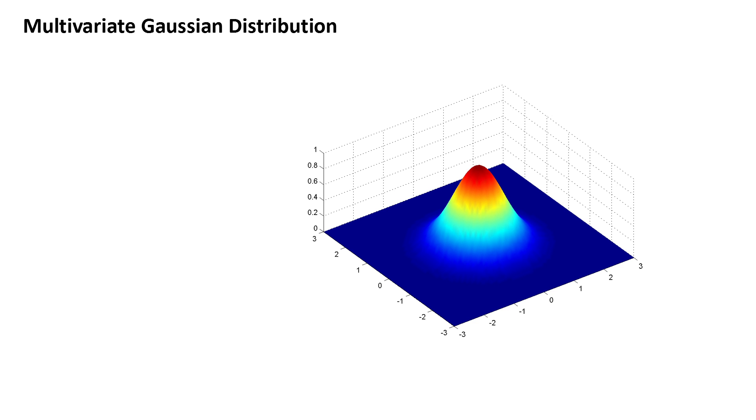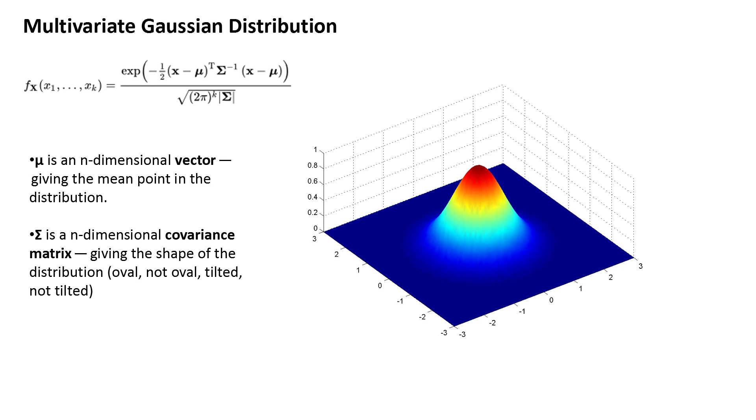This can be extended to a multivariate Gaussian distribution where we're looking at higher dimensions. Mu then becomes an n-dimensional vector giving the mean point in the distribution, and sigma becomes an n-dimensional covariance matrix giving the shape of the distribution.